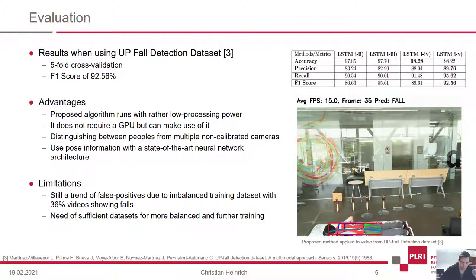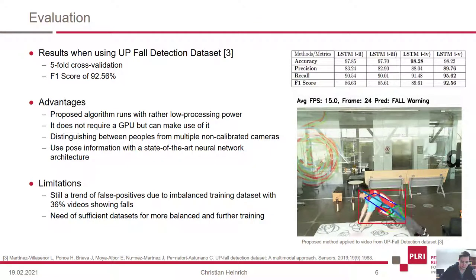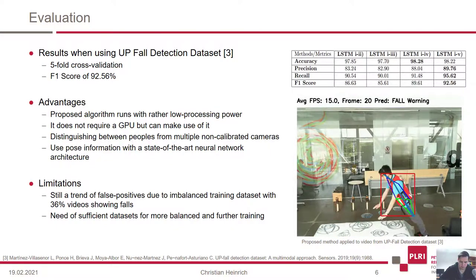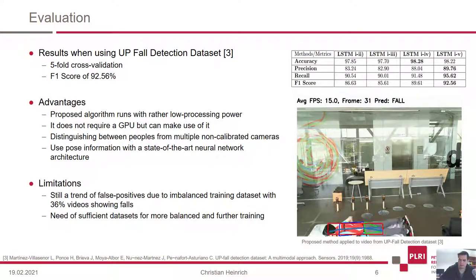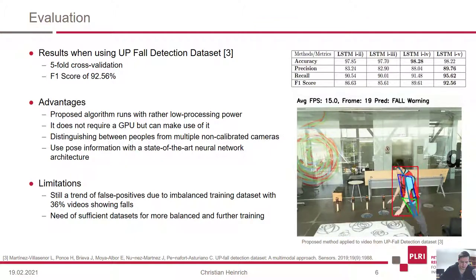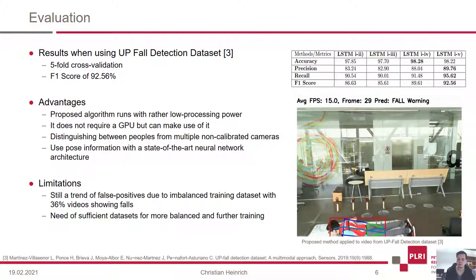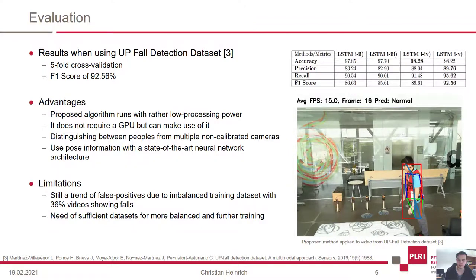The best result was obtained with all five features and an F1 score of 92.56%. Our proposed algorithm runs with rather low hardware requirements. It does not require a GPU, but can make use of one. Another advantage is that it can distinguish between people from multiple non-calibrated cameras and it uses human pose information with a state-of-the-art neural network architecture.